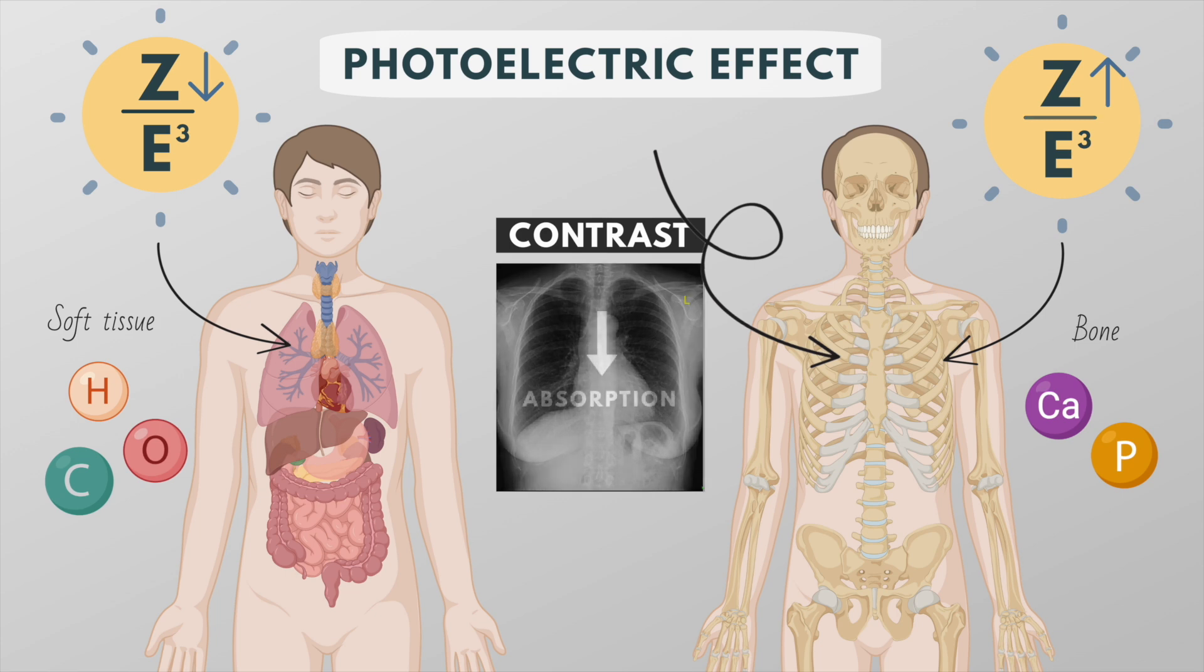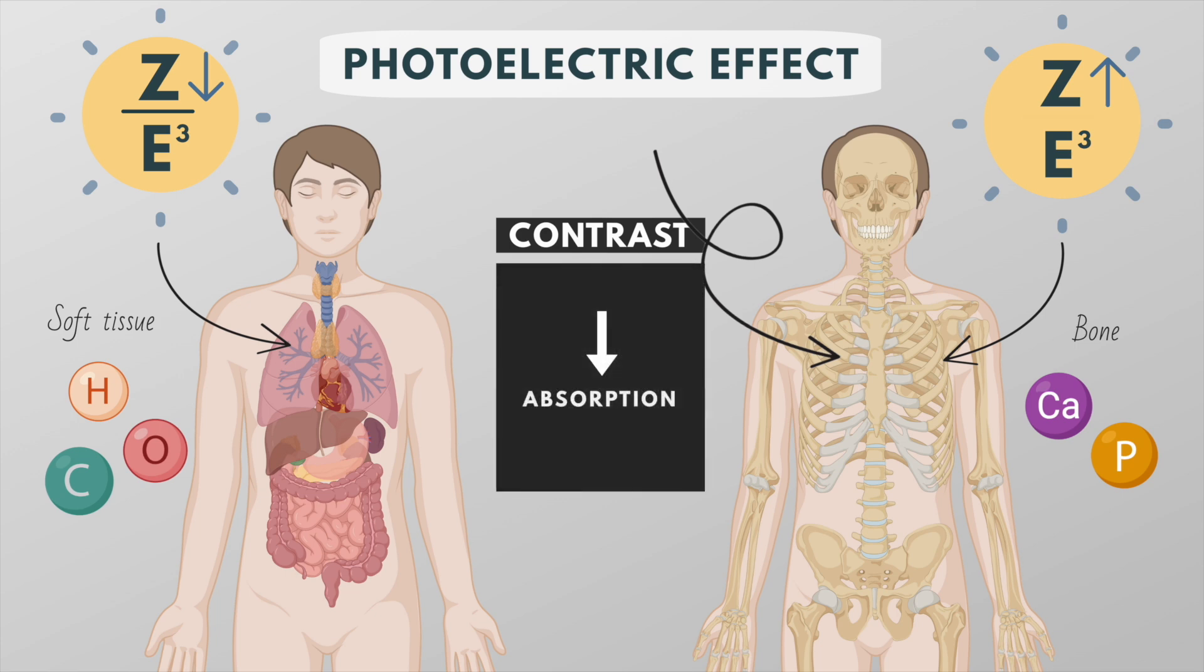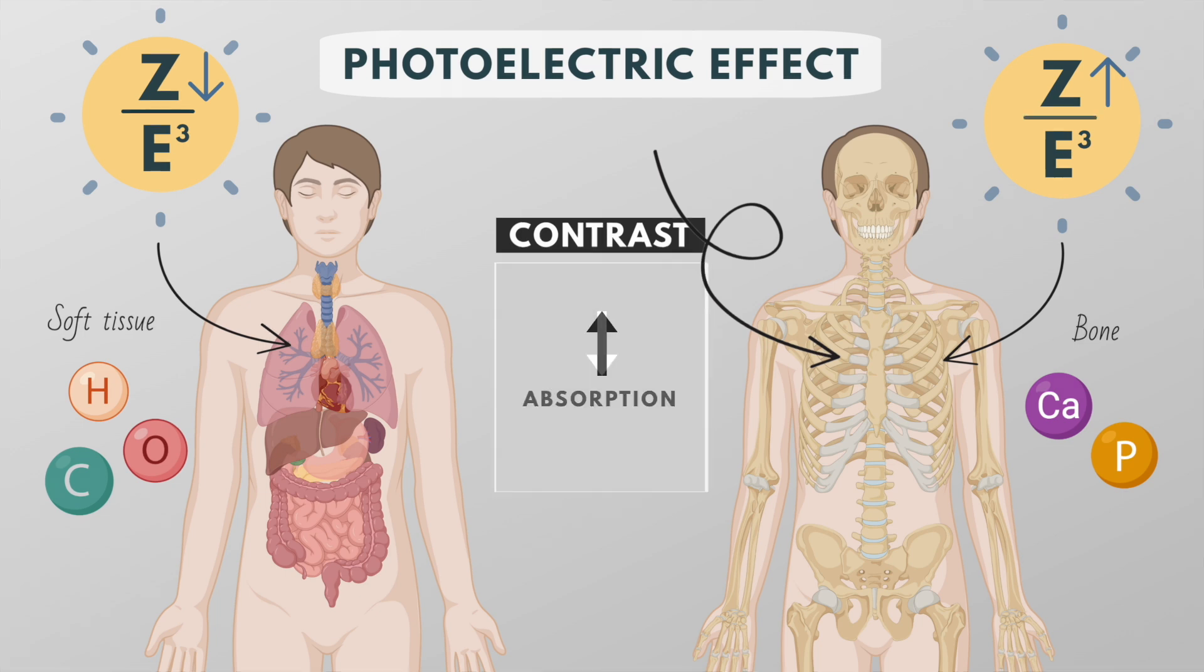If all x-rays were to pass through the patient, the image would be uniformly dark, and if all the x-rays were to be absorbed, the image would be uniformly white.